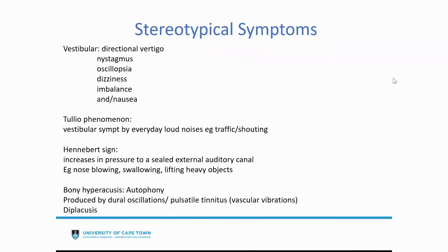Stereotypical symptoms in these patients predominantly involve vestibular dysfunction: directional vertigo, nystagmus, oscillopsia, imbalance, or nausea. The Tullio phenomenon describes vestibular symptoms induced by everyday loud noises like traffic or shouting. Hennebert sign occurs when increased pressure in the external auditory canal induces vestibular symptoms. Patients may also describe symptoms when blowing their nose or straining. They can complain of bony hyperacusis, autophony — hearing themselves — possibly from dural oscillations, pulsatile tinnitus, and diplacusis.